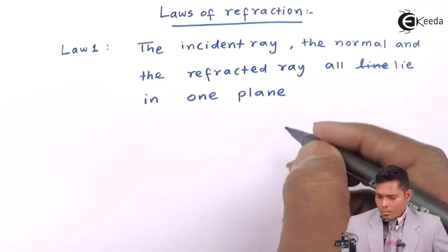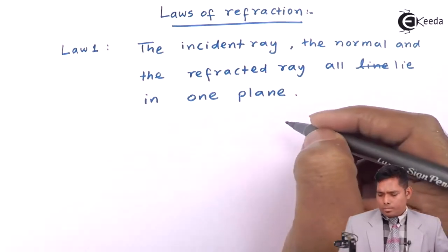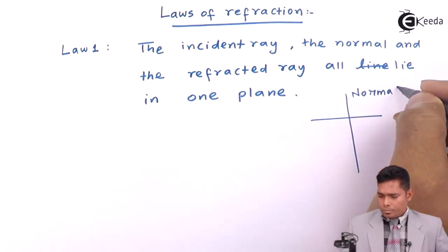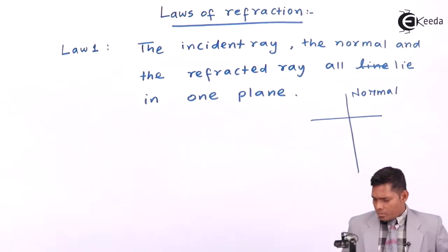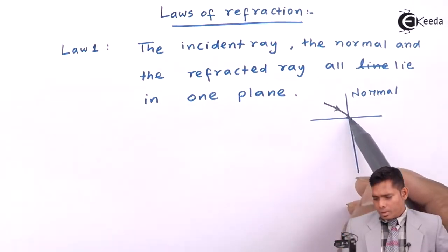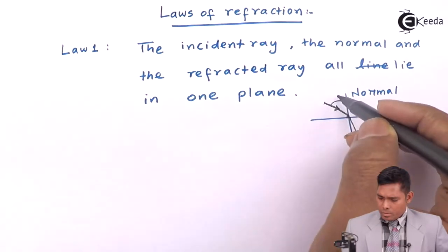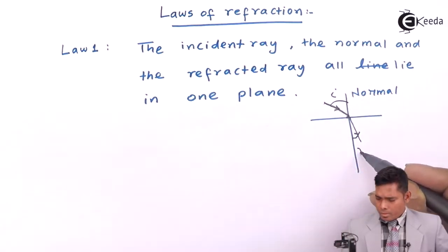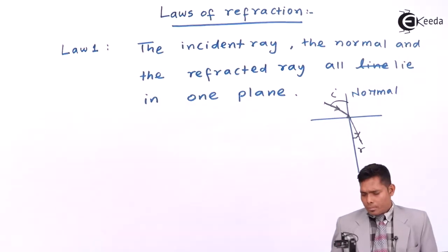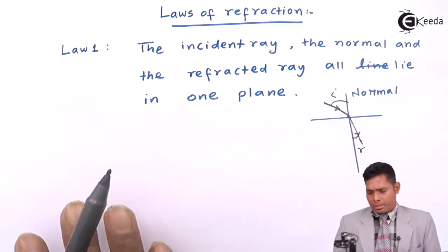One plane, and on the opposite side of the normal. This is the normal, this is the interface, this is how the ray strikes the surface at this point, and towards the normal bends like that. This is I, this is R — this angle is called the angle of reflection, and I is called the angle of incidence. This line, this line, and this line all lie in the same plane — that means in the plane of the paper.